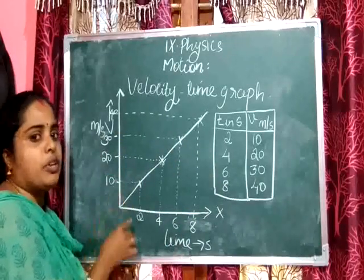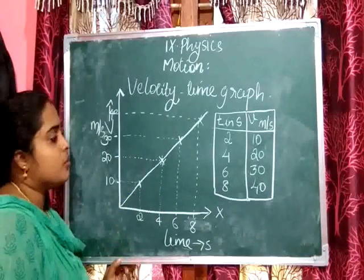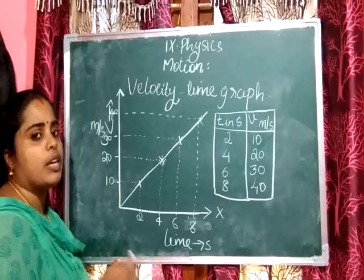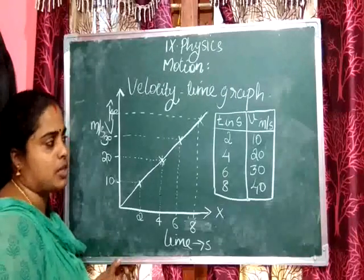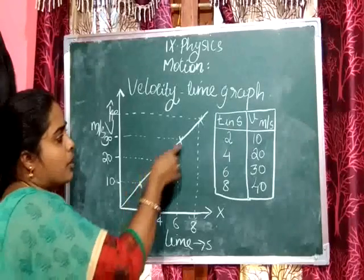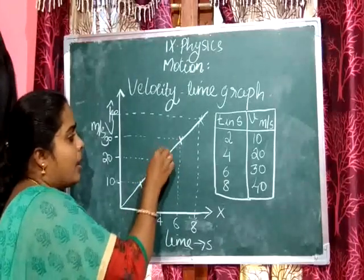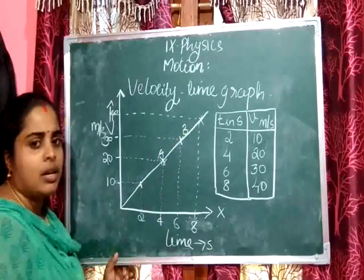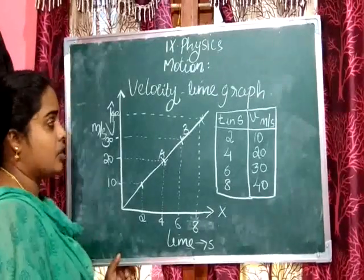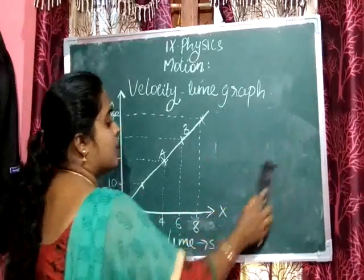From this graph we can find the acceleration and also the distance travelled by the object. To find the acceleration, let us consider two points A and B on the graph at any instant of its motion. We are going to find the acceleration of this motion — how can we calculate acceleration from this graph?